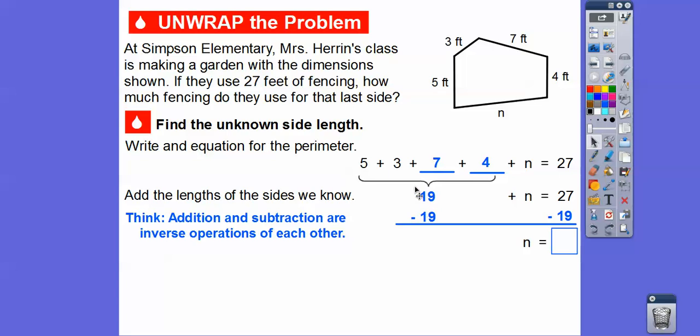And so we subtract 19, and then we subtract 19 from 27. And then so what happens is these 19s on the left will cancel each other out. And then so 27 minus 19, here I'm using my fingers, you guys. So I'm at 19, so 20, 21, 22, 23, 24, 25, 26, 27. I see 8 fingers right now. So 27 minus 19 is 8. So they will use 8 feet of fencing for that last side. So that would add up to the 27 feet of fencing.